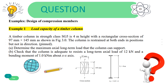Here is the question. A timber column in strength class SG5 is 4 m in height with a rectangular cross section of 97 mm x 145 mm as shown in figures. The column is restrained at both ends in positions but not in direction. First, determine the maximum axial long-term load that the column can support. Second, check that the column is adequate to resist a long-term axial load of 12 kN and a bending moment of 1.0 kNm about the x-x axis.